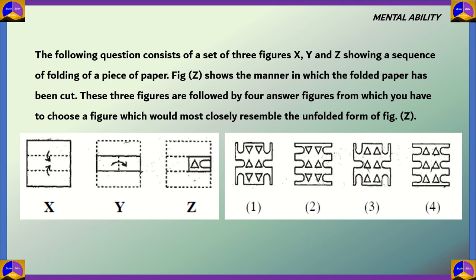Let's begin with the mental ability question. The following question consists of a set of three figures X, Y, and Z showing a sequence of folding of a piece of paper. Figure Z shows the manner in which the folded paper has been cut. These three figures are followed by four answer figures from which you have to choose a figure which would most closely resemble the unfolded form of figure Z. So we have three steps on folding a paper and then a cut has been made in the final fold. We have to know which of these would be the original paper if the cut has been made.